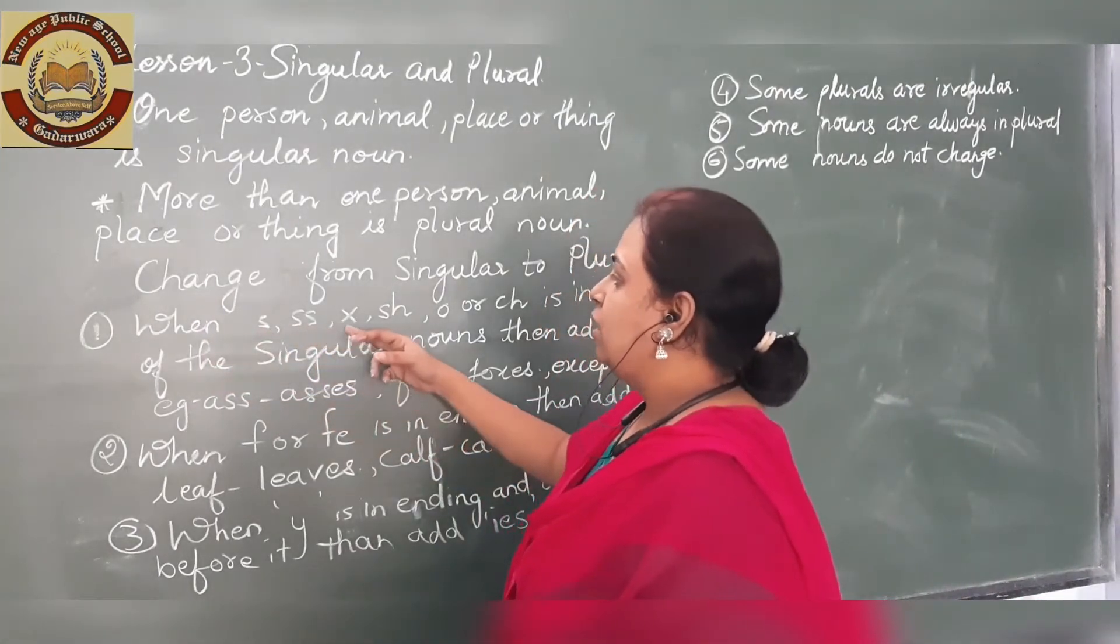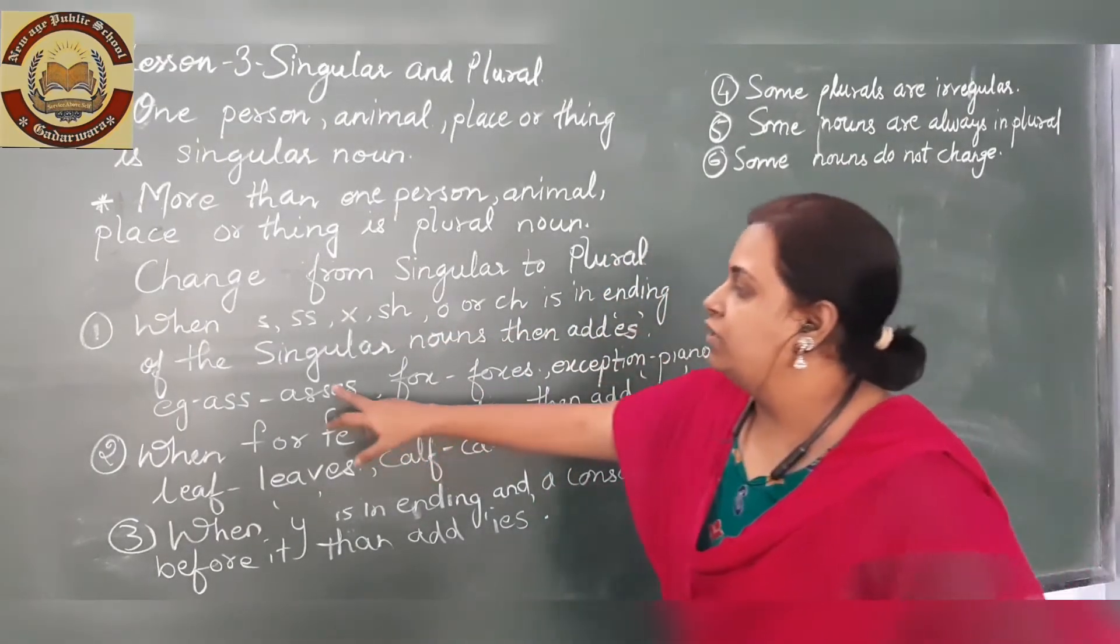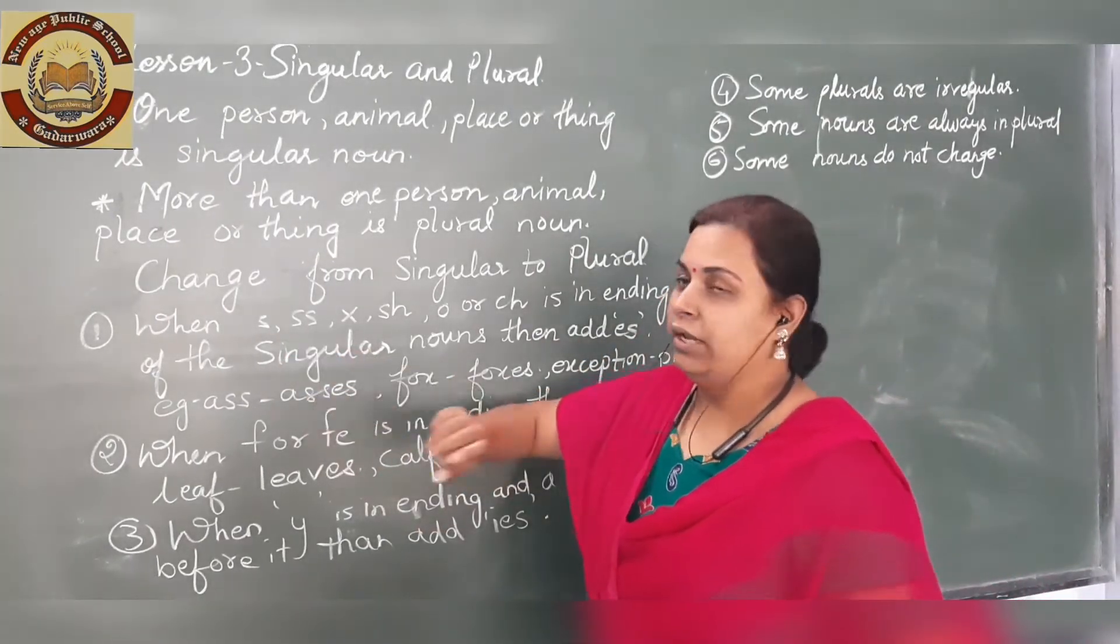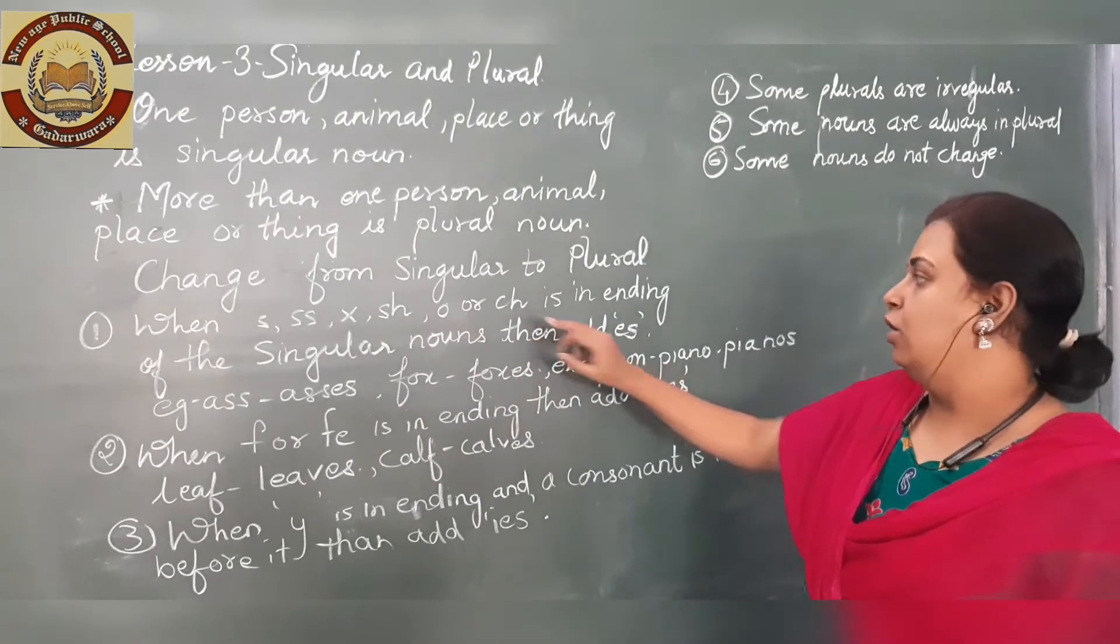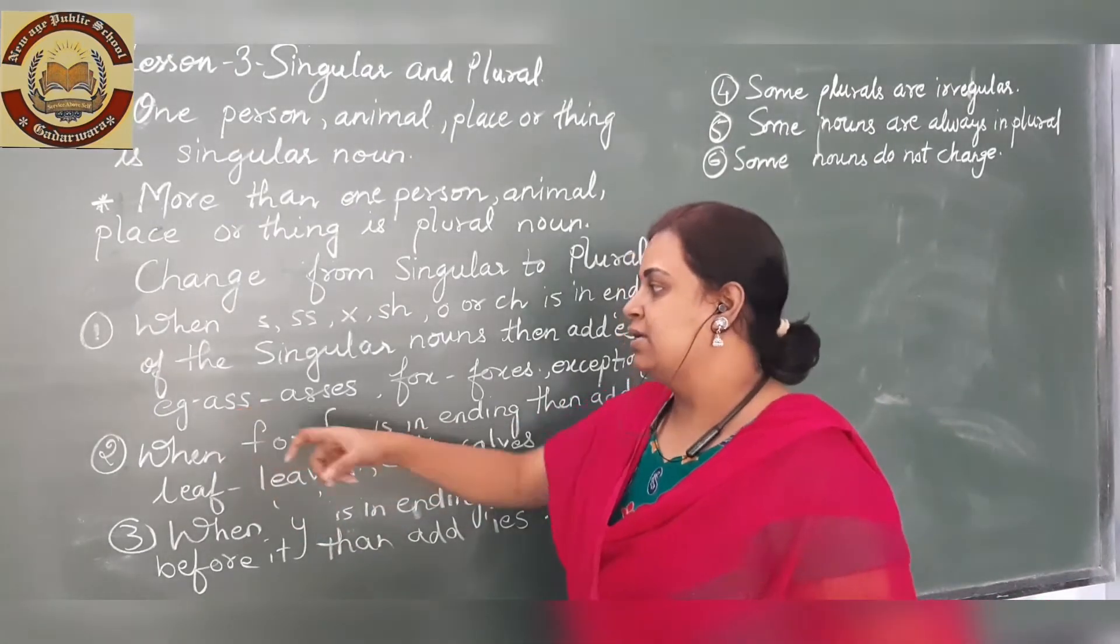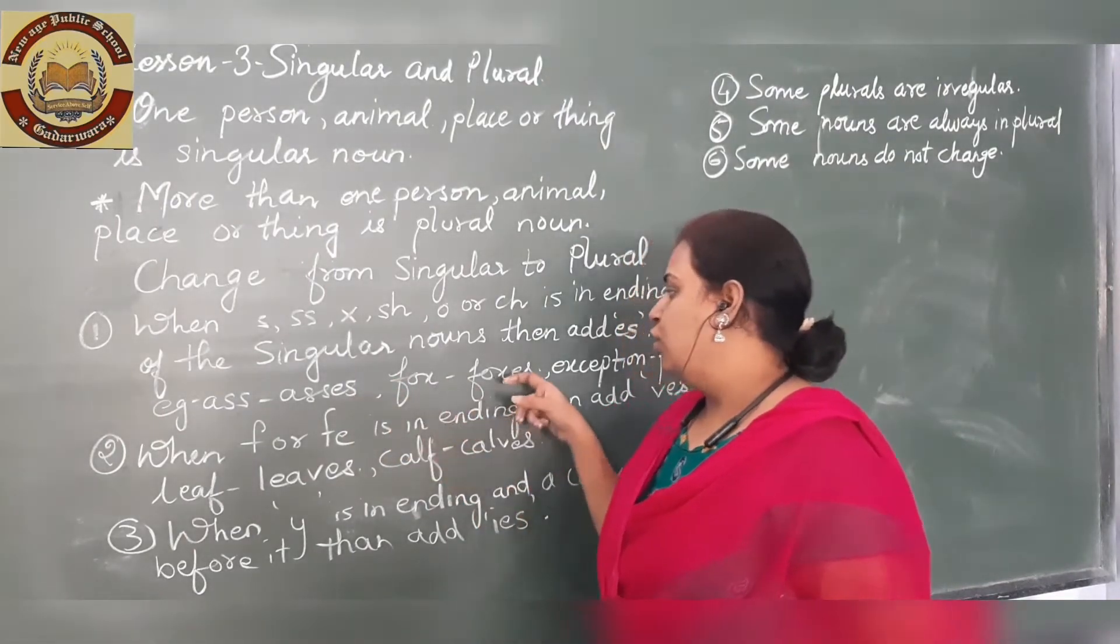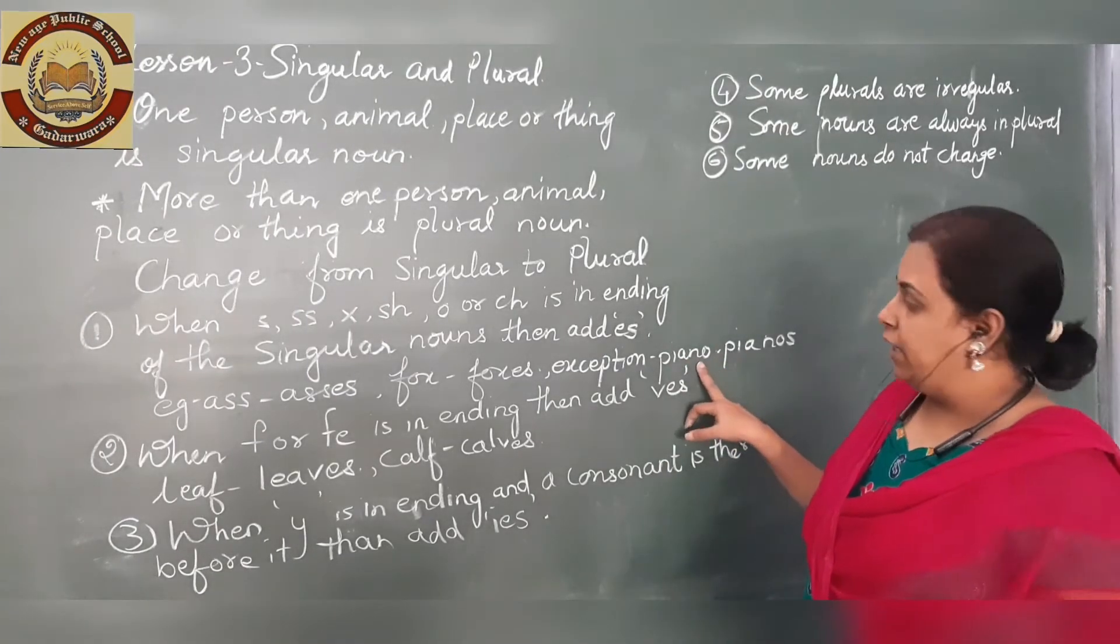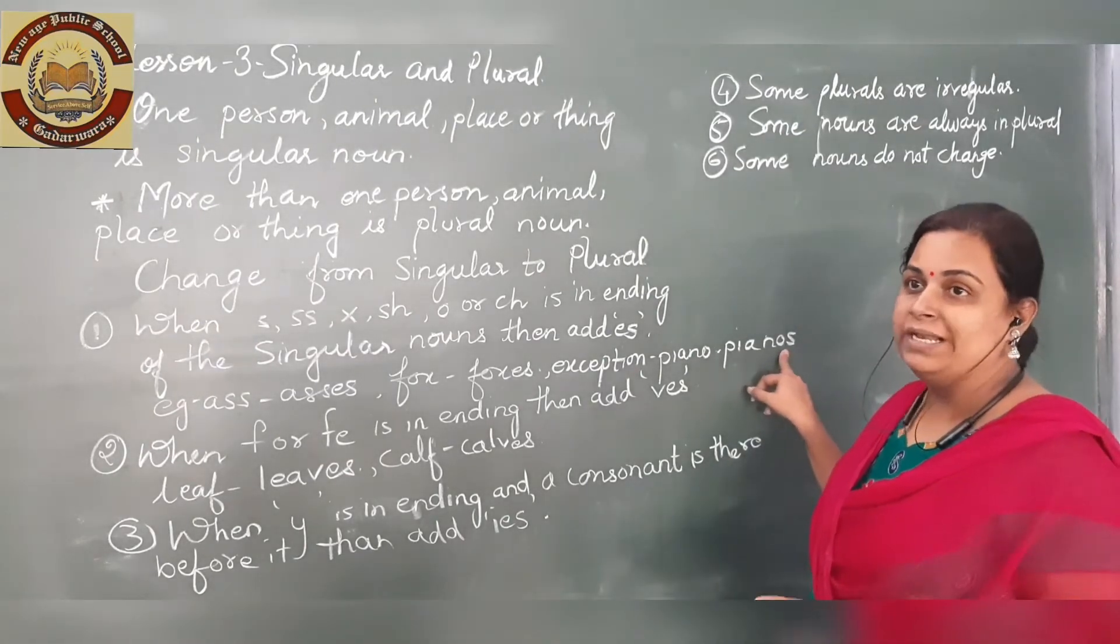When S, SS, X, SH, CH, or O is at the ending of the singular noun, then add ES. If the singular noun ends with S, X, SH, O, or CH, simply add ES - like foxes. But there is one exception with piano, so please be careful when changing piano to plural.